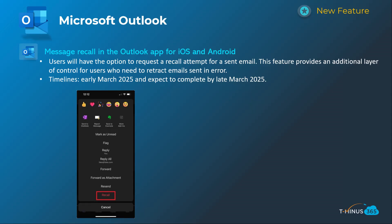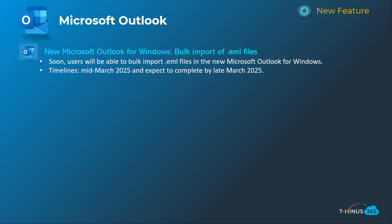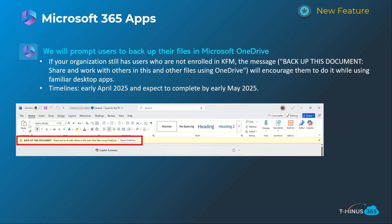Next is related to Outlook for iOS and Android — the recall functionality has been available on web and desktop, but it's now extending into the mobile experience, giving users the ability to retract emails they may have sent in error. This will happen early March and be complete by late March. Additionally, Microsoft is slowly catching up to the classic Outlook experience, now allowing users to bulk import .eml files, with a mid-March to late March timeline.